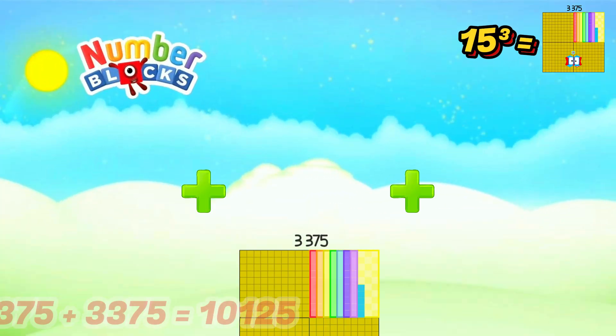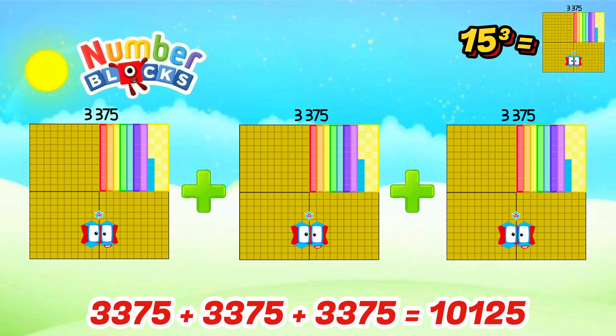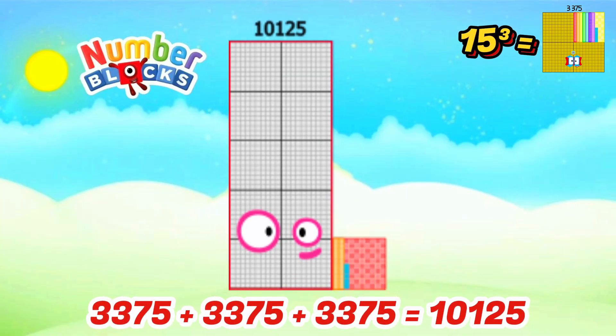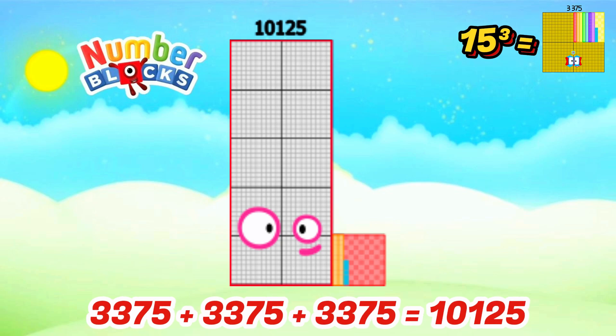Cube of 15 is 3,375. When we add 3,375 three times, the answer is 10,125. Amazing!